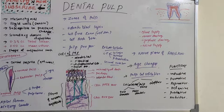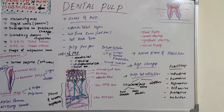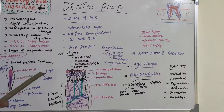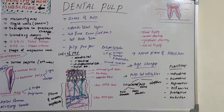Welcome back to another session in dentistry. Today's topic is dental pulp. We have finished the majority of topics — enamel, dentine, and the periodontium, which includes cementum, alveolar bone, periodontal ligament, and gingiva. The last topic in tooth-related structures is dental pulp, which is a mesenchymal connective tissue.